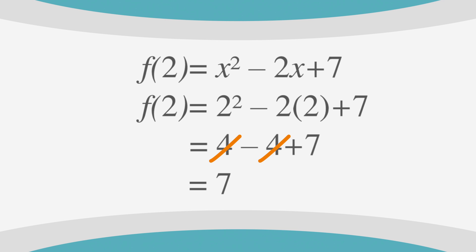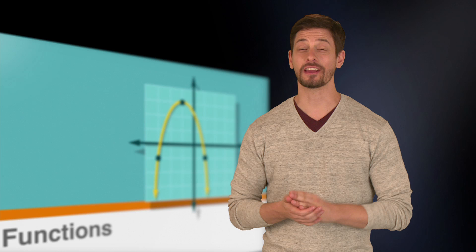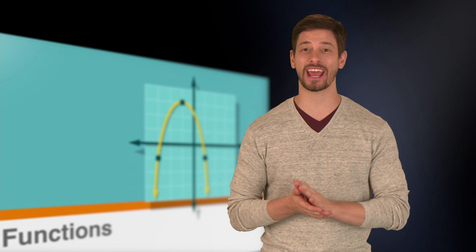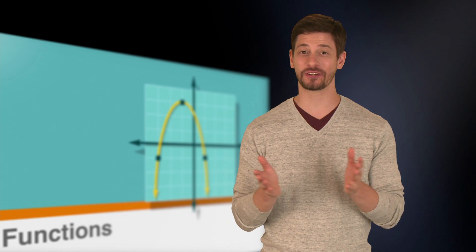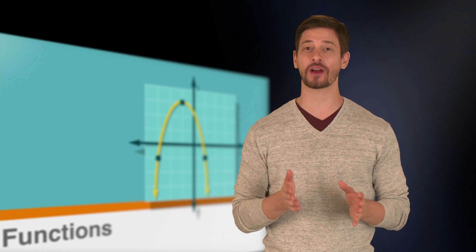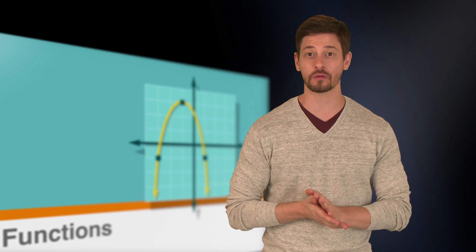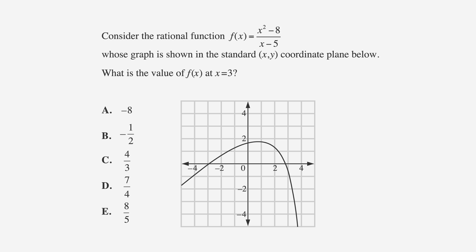So in this function, f(2) equals 7. The other type of function you might encounter in the ACT is the graph. In this case, you might be given a specific value for x and asked to find the value for the y coordinate. Here's an example.